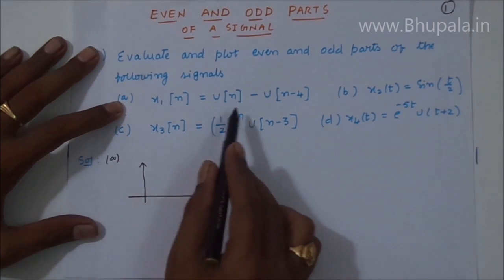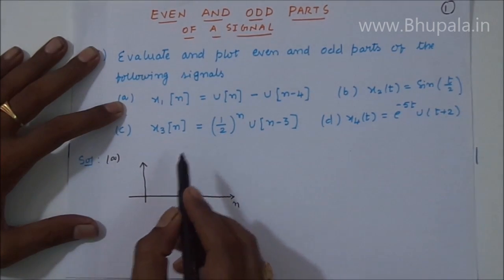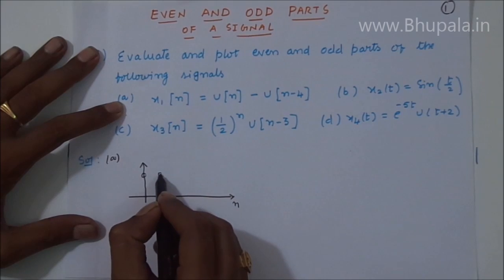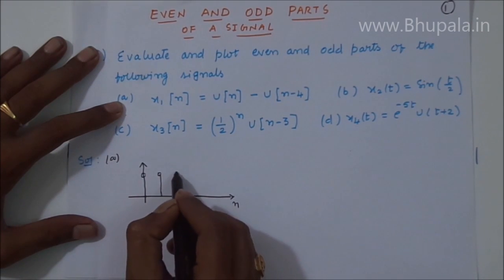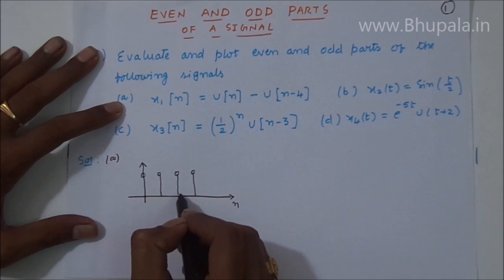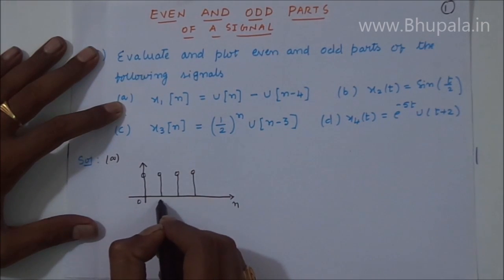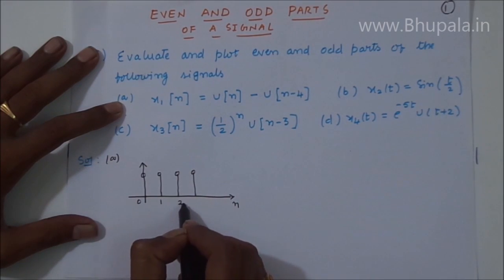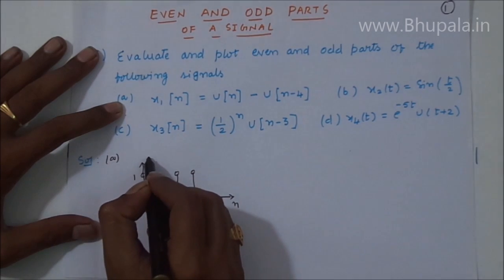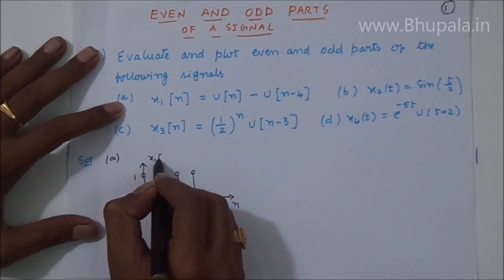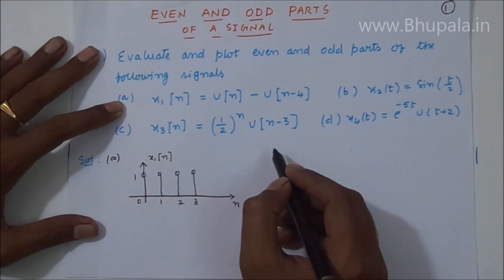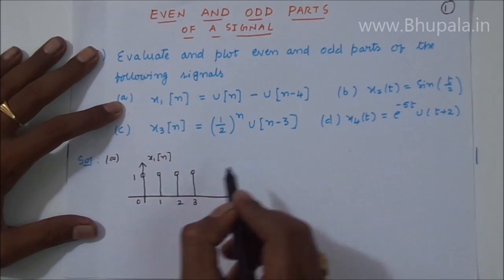We are solving question (a): u[n] minus u[n minus 1]. The corresponding signal exists only from 0 to 3, so this is our signal x1 of n, which has amplitude only between 0 and 3.